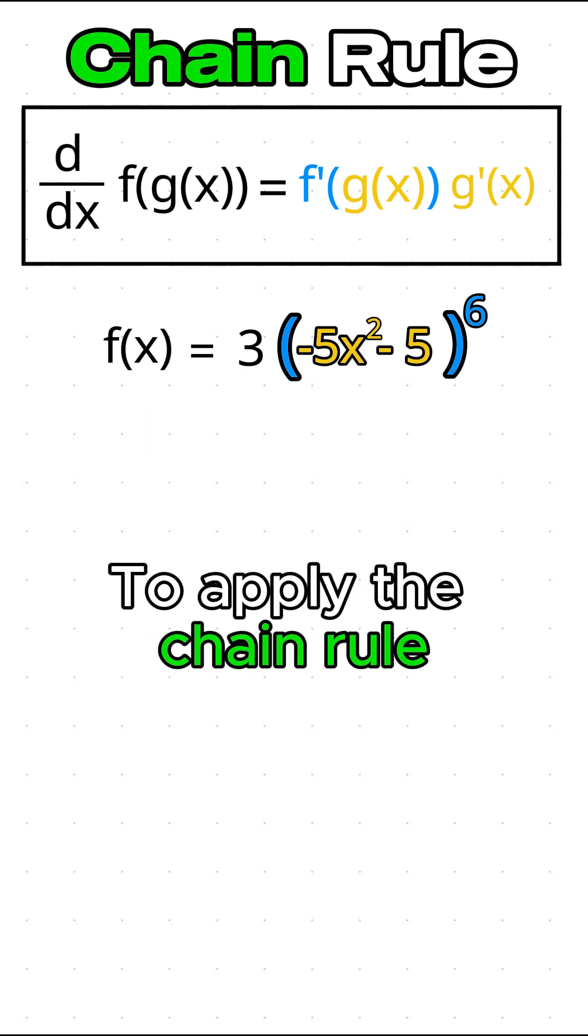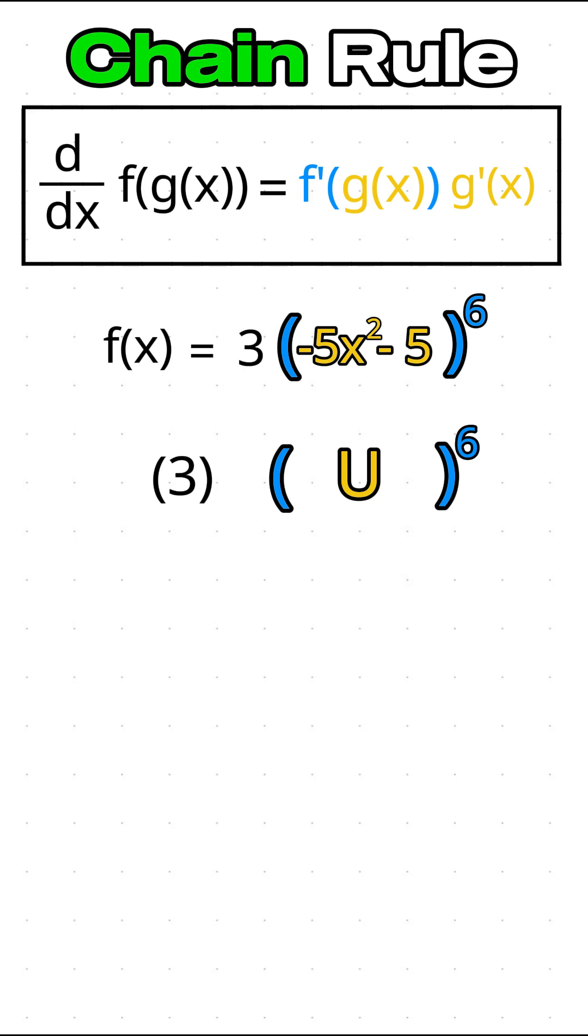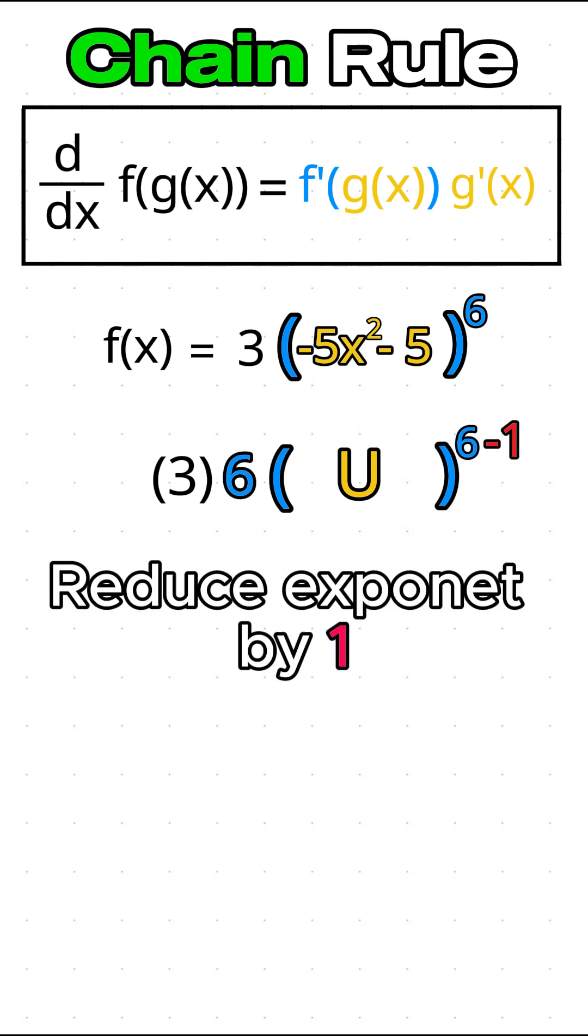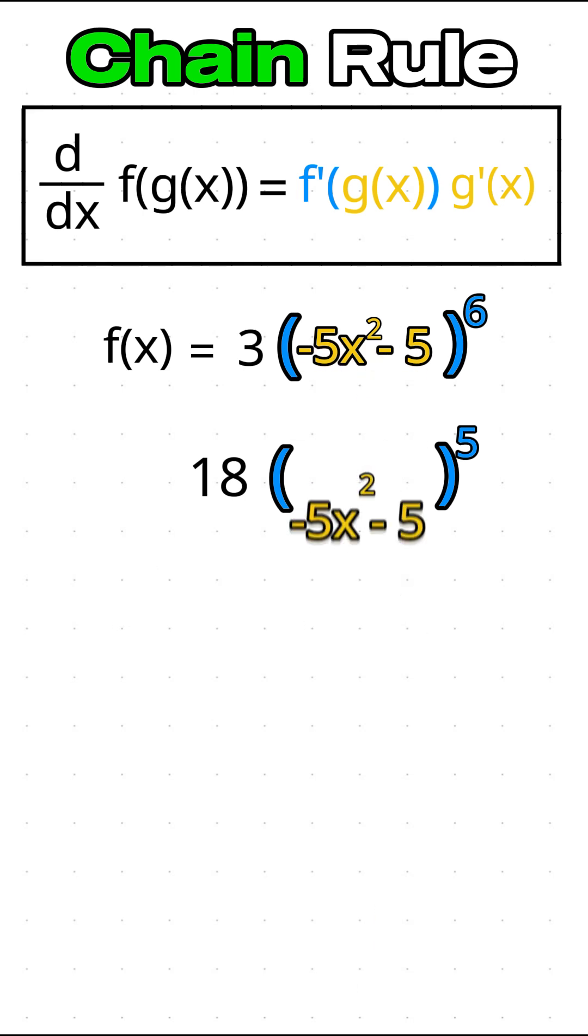To apply the chain rule, we can follow these steps. Differentiate the outer function. For u to the 6, we can bring the 6 down and reduce the exponent by 1. Now, we can substitute g of x back in, and we get this answer.